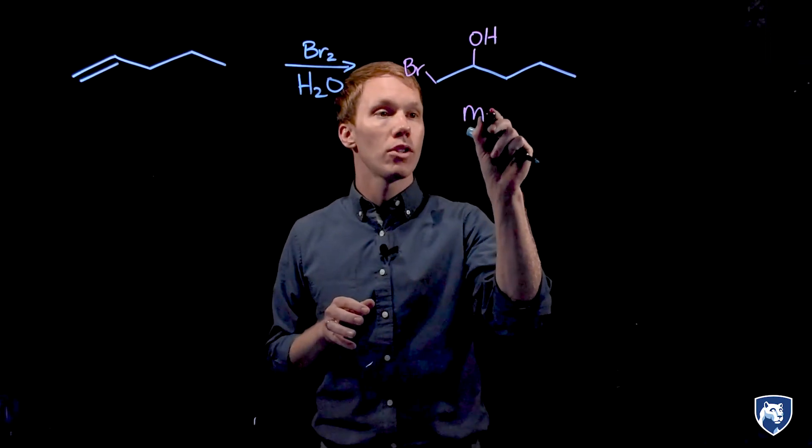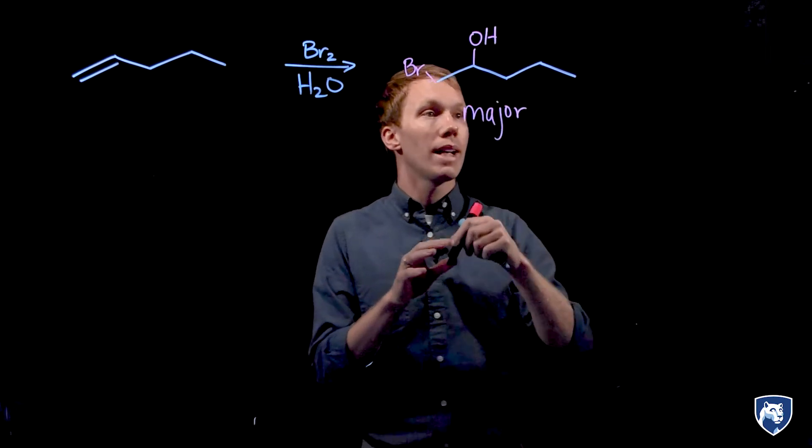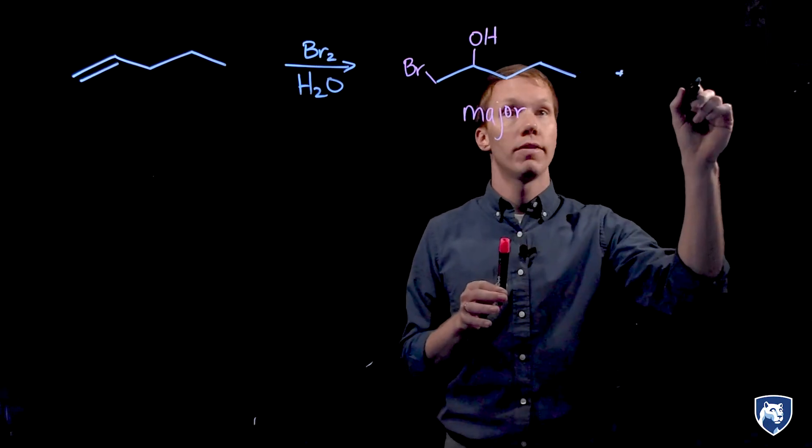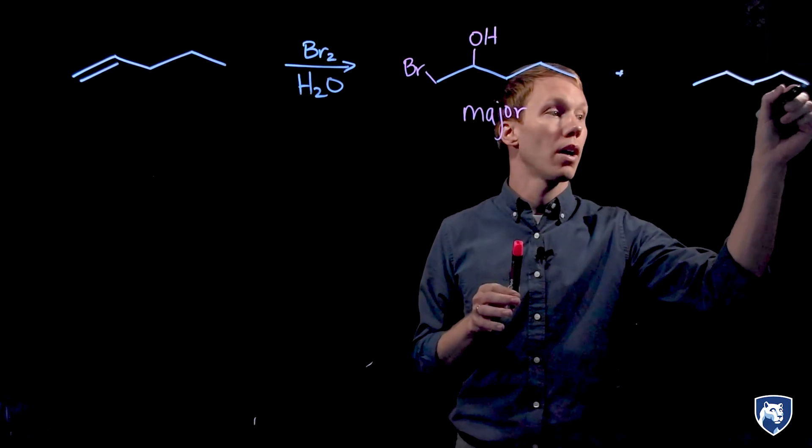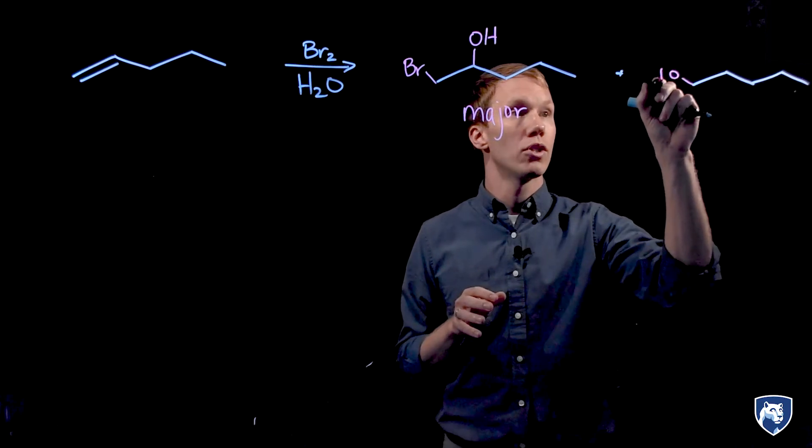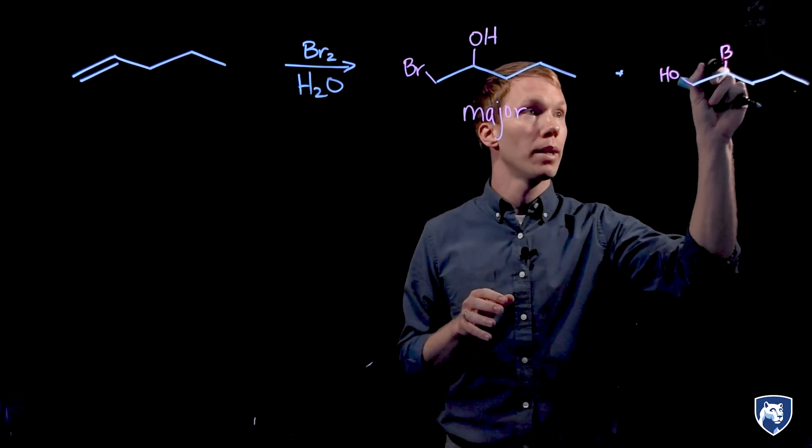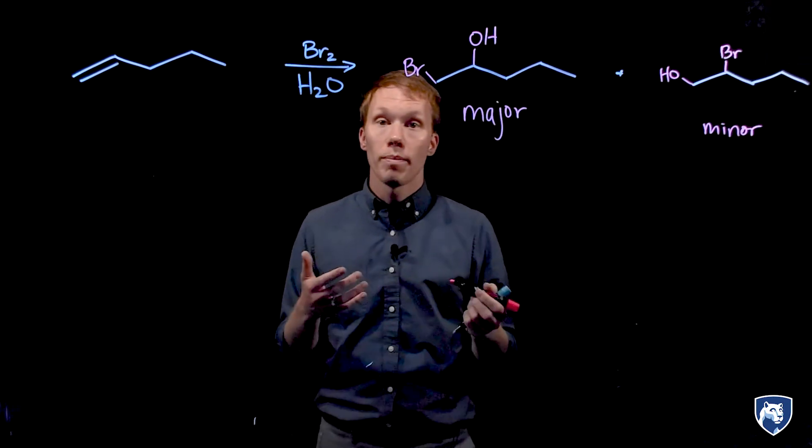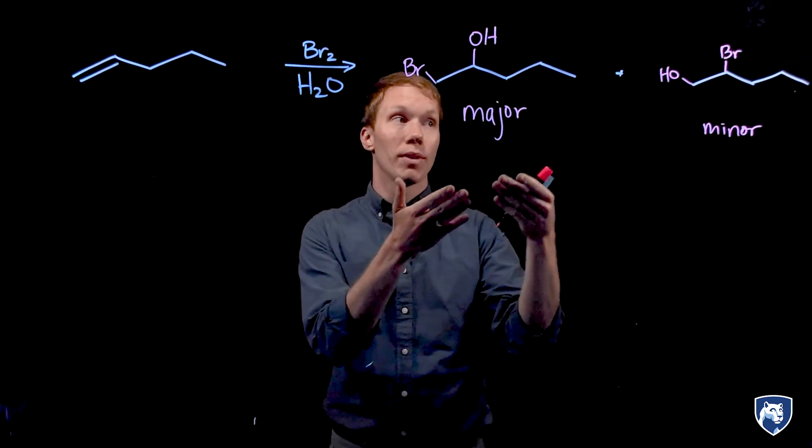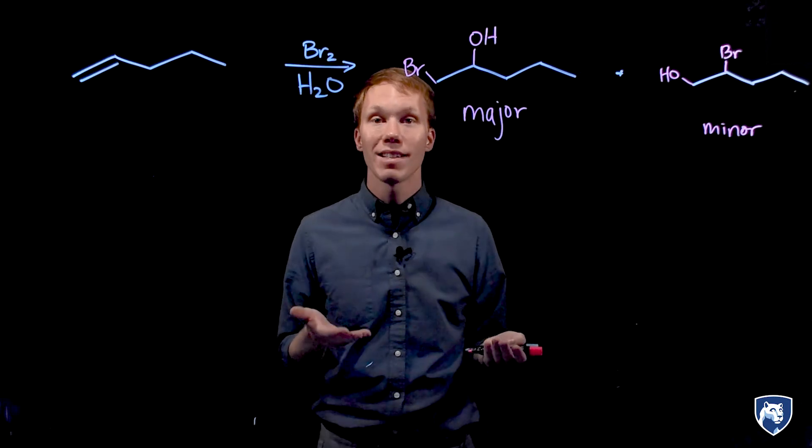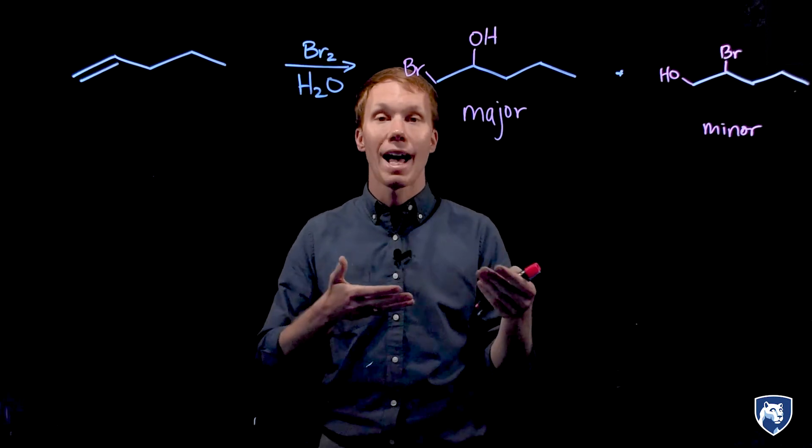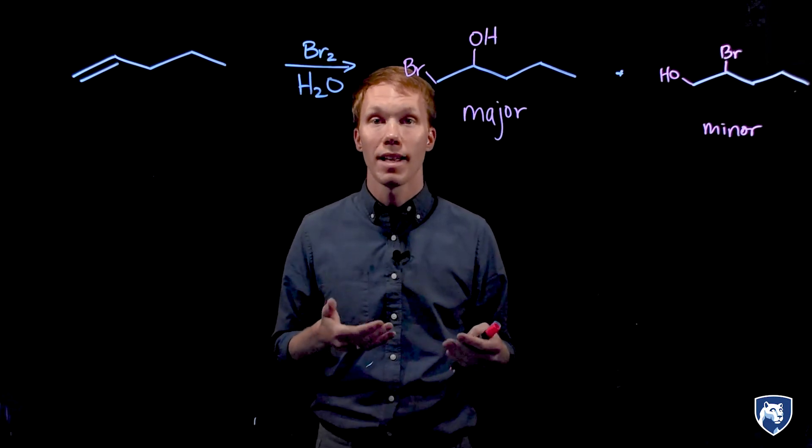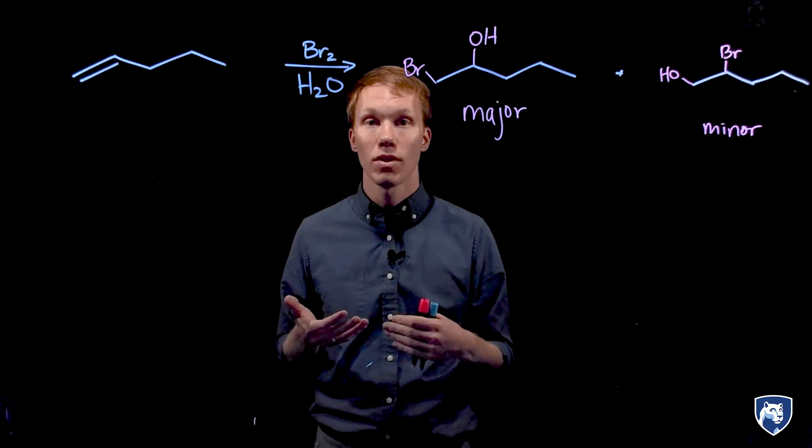So this is our major product and we get minor amounts of the constitutional isomer, having the OH on the primary site and the bromine at the secondary site. So because we have one constitutional isomer in excess of the other, this reaction is regioselective. The OH adds to the more substituted site and the halogen adds to the less substituted site.